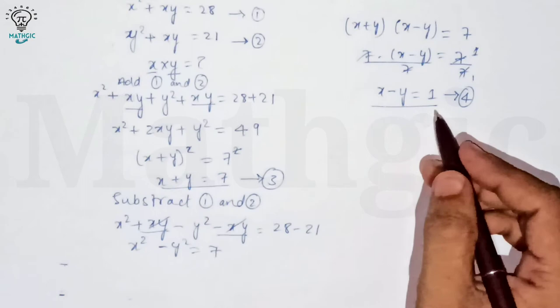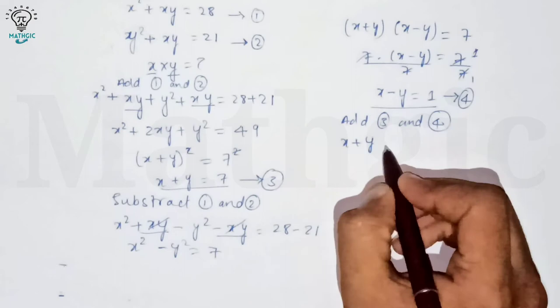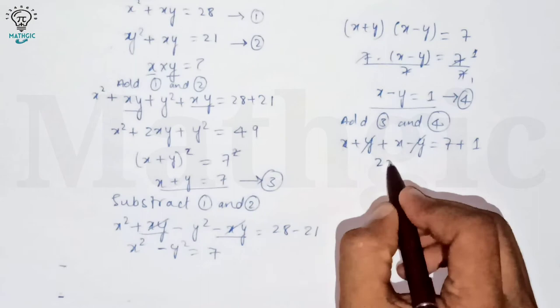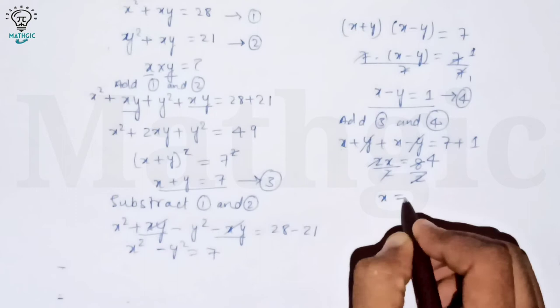Now solve equations three and four together. Add equation three and four: (x plus y) plus (x minus y) equals 7 plus 1. The y terms cancel, giving 2x equals 8. Divide both sides by 2, so x equals 4.